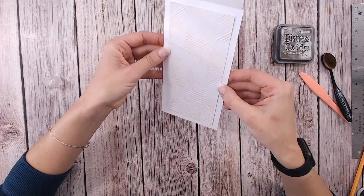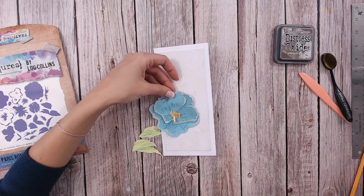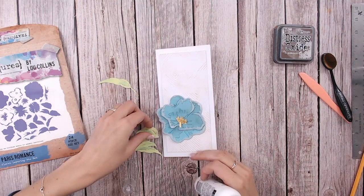So that's on there and then I've got some florals here just from the Paris Romance Textures collection. This is the floral layering die set. I've already got some flowers put together so these are going to sit, so these will be the nice bold focal points.